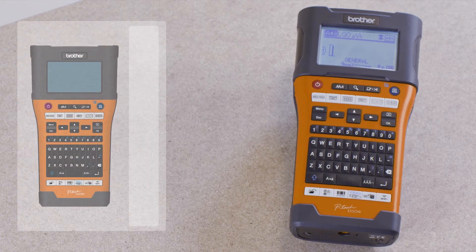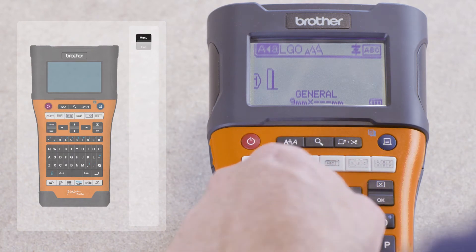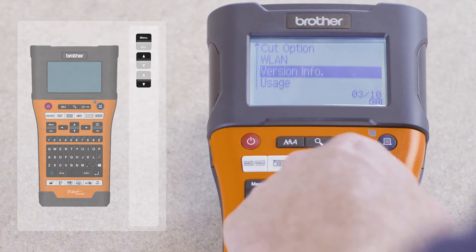Now let's set up the printer. Firstly, press the menu key on the printer and use the up down arrow keys to scroll to the Wireless LAN option.